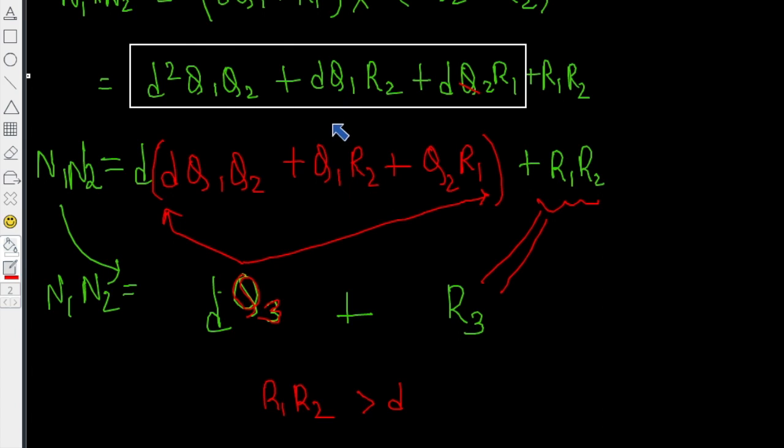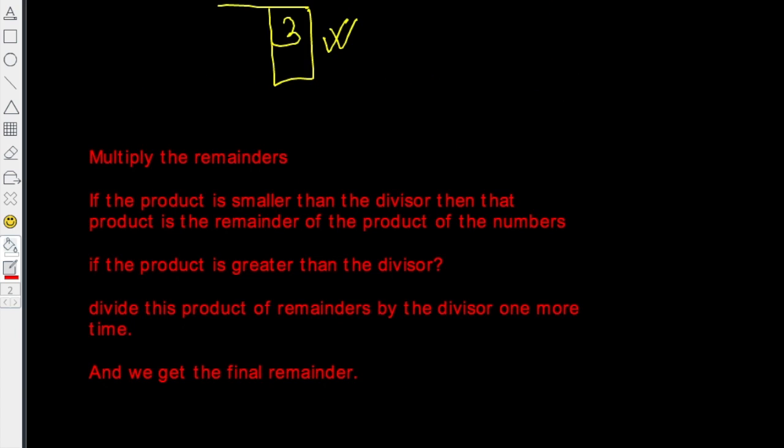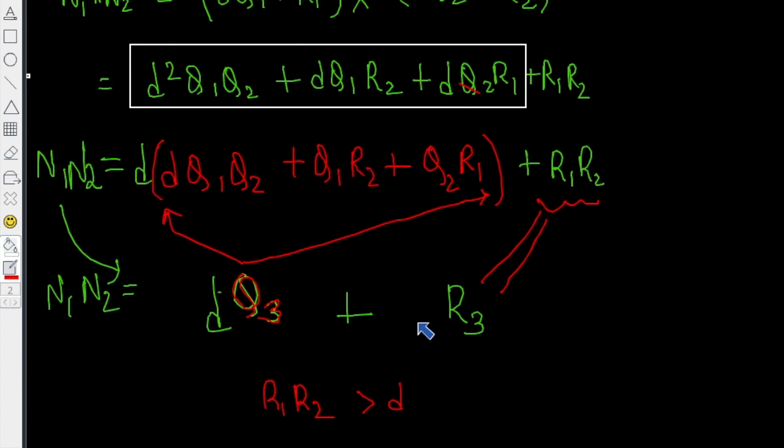This arithmetic of remainders leads to many exciting and interesting problems, and we hope to look into them in some of the upcoming videos. A direct result of this arithmetic of remainders is the theory of congruences which was developed by Gauss.